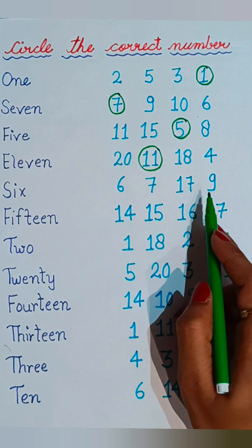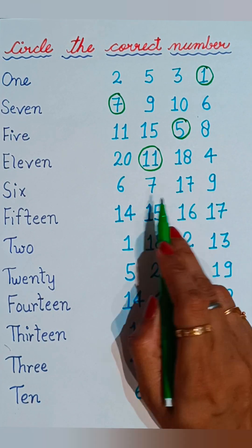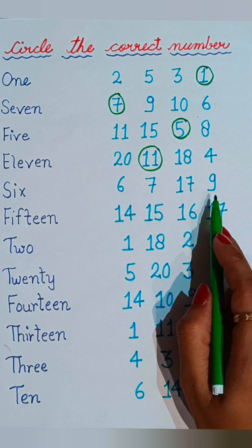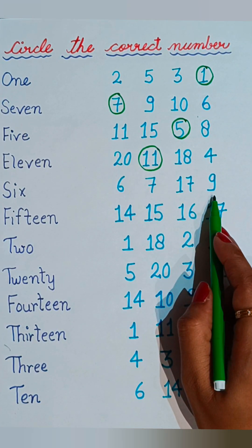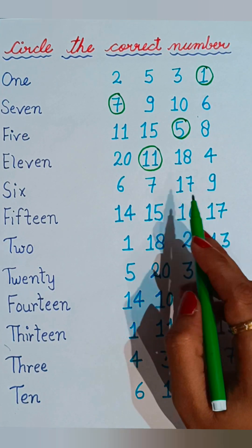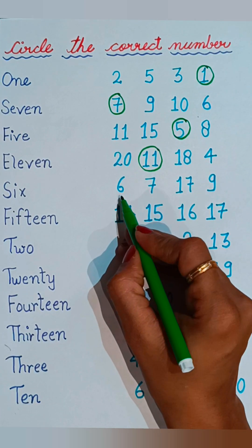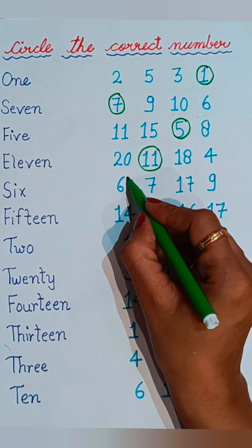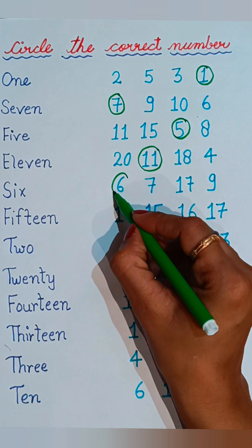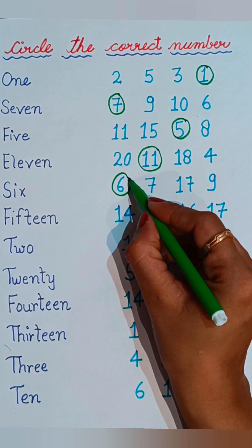S-I-X, six. Now tell me where six is given. Six, seven, seventeen, and nine — six is given at the first number, so we will circle the number six.